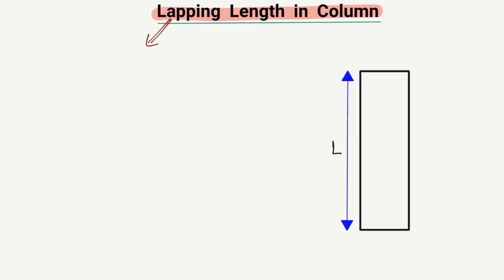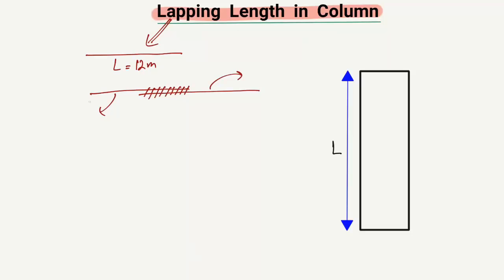Why do we provide lapping in columns, beams, or slabs? Basically, the standard length of a steel bar from the company is 12 meters. So when we want to construct a high-story building of, say, 100 meters, we have to overlap our steel bars. We tie these steel bars together in order to transfer the load from one bar into the next, and this is what we call the lapping length.